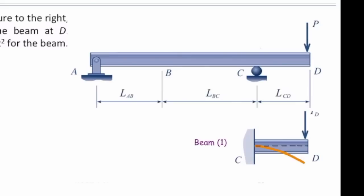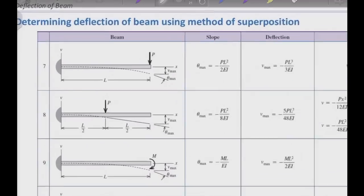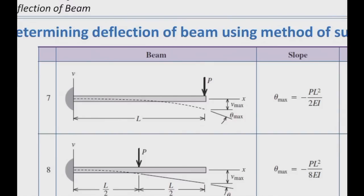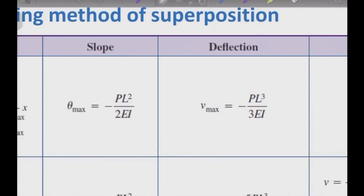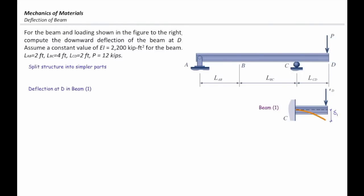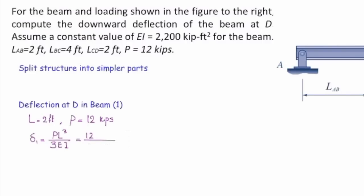I'll call this beam number one, and its deflection at the right part is shown by delta one. To find delta one, we go to the table — the appropriate figure is figure number seven. Since we're looking for the deflection at the very right end, which is the maximum deflection, we use: maximum deflection = PL³ / 3EI. The length is L_CD, which is 2 feet. Plugging in values — P = 12 kips, L = 2 ft, EI = 2200 kip·ft² — gives delta one = 0.0145 feet downward.